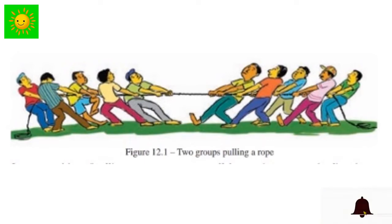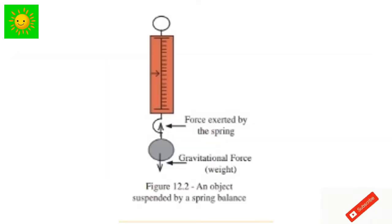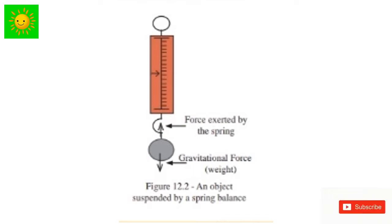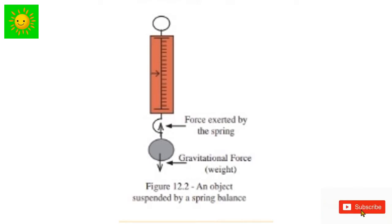This figure shows an object suspended by a spring balance. There are two forces acting on the object: one is the weight of the object due to gravitational force, and the other is the upward force exerted by the spring of the balance to keep the object from falling. Under these two forces, the object remains at rest and is in equilibrium.